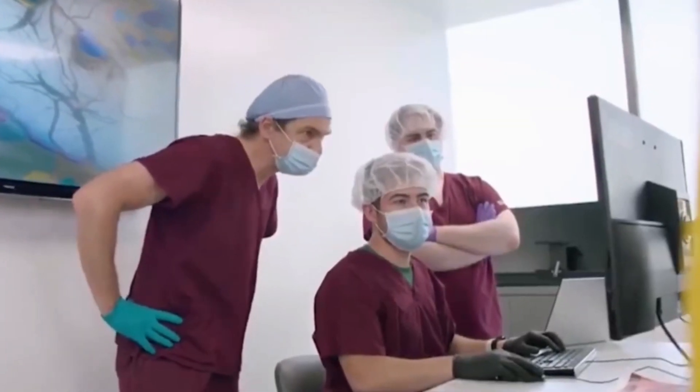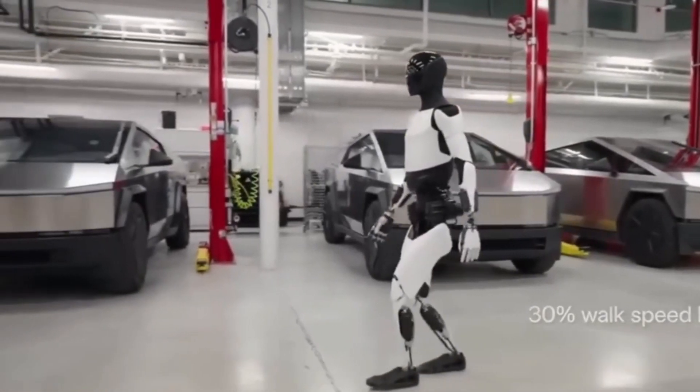In the future, users will be able to control Tesla's humanoid robot, Optimus, with their thoughts using Neuralink's device. Musk stated that this device could be available for sale as early as the end of next year and predicts it will transform the electric car manufacturer into a $25 trillion company.